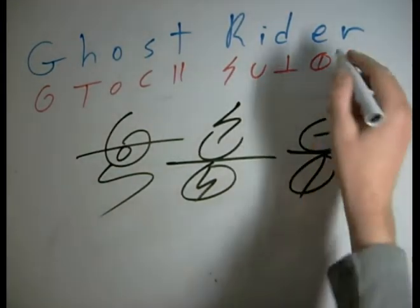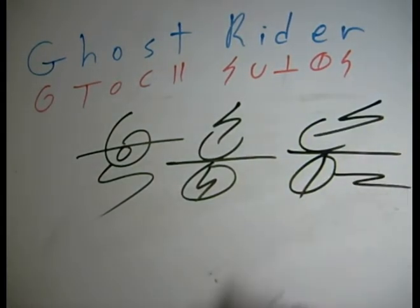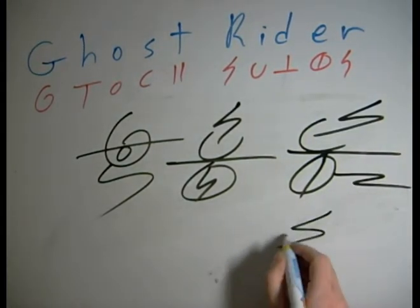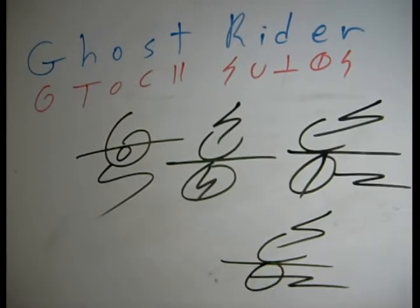And then, maybe we don't use the double E, R combination. Instead, we put the R like that. Or, we go like so. Now, we can start to look like we're writing something, maybe. It really is a very subjective art.